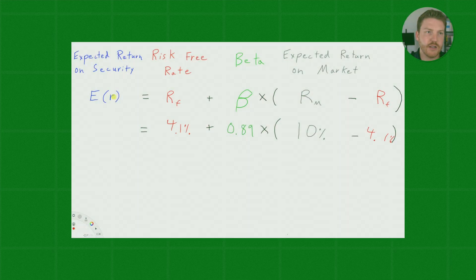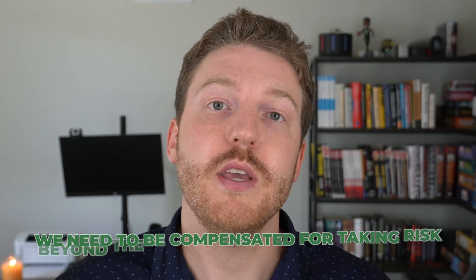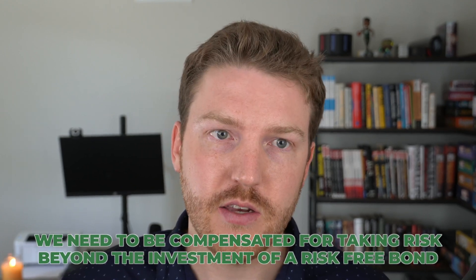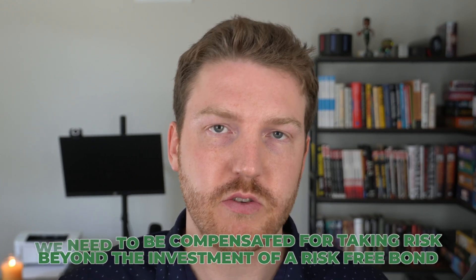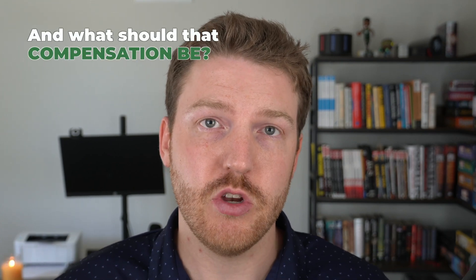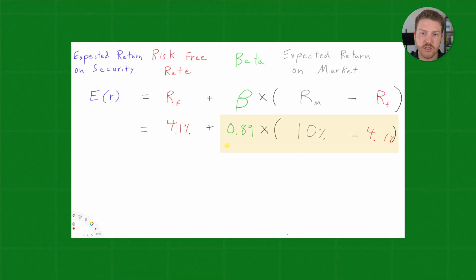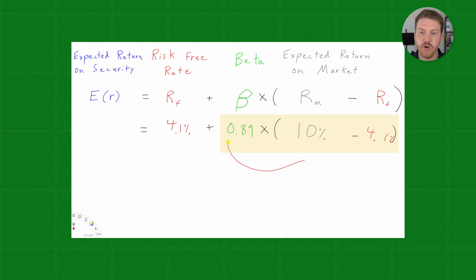So, we're looking at the expected return on the security of Microsoft. It should be equal to the risk-free rate, so what we could get if we had only invested in a government bond, that would be 4.1%. But to invest in Microsoft, we need to be compensated for taking risk beyond the investment of just a risk-free bond. And what should that compensation be? Well, it will be equal to this total value right here, which is essentially the risk premium in excess of the risk-free rate that I as an investor demand to invest in Microsoft.